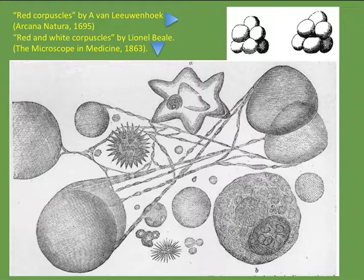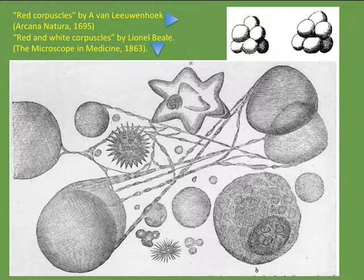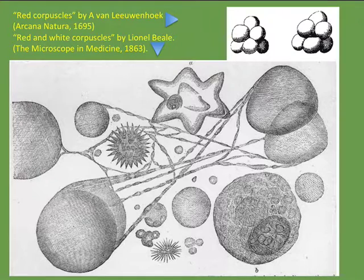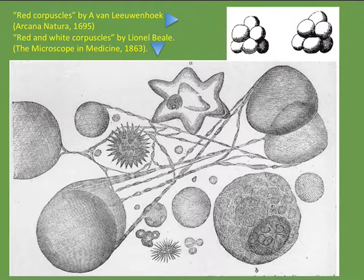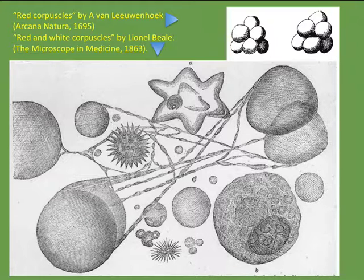Red corpuscles were first identified by van Leeuwenhoek, and these are drawings of the first red blood cells made in Arcana Natura in 1695 — the very first time humans were able to look at the corpuscles. About 150 years later, Lionel Beal had a much more detailed picture. He called these red and white corpuscles and published this in 1863 after microscopy had improved. Here we can begin to identify some types of blood cells: we have monocytes, platelets, red blood cells, and perhaps a polymorphonuclear leukocyte.